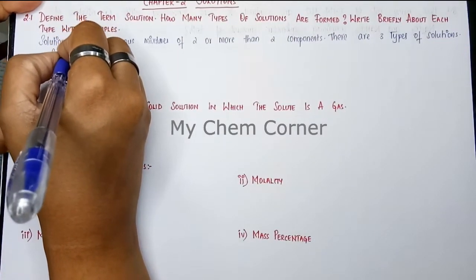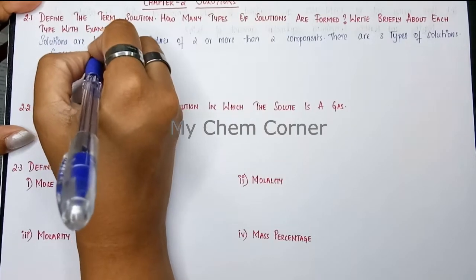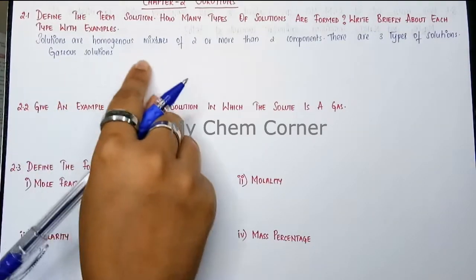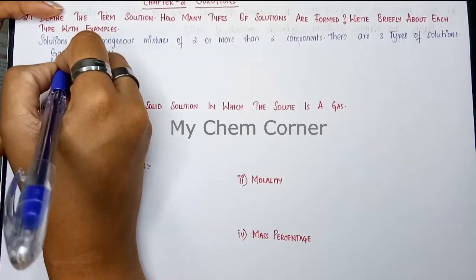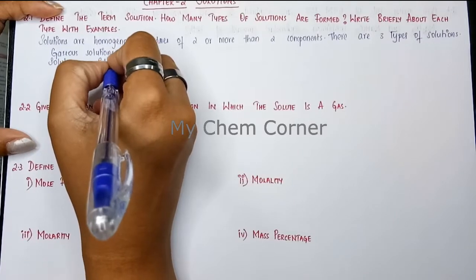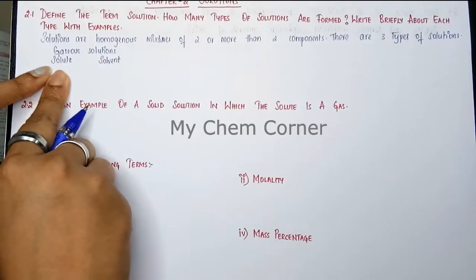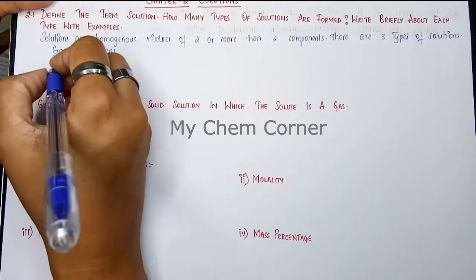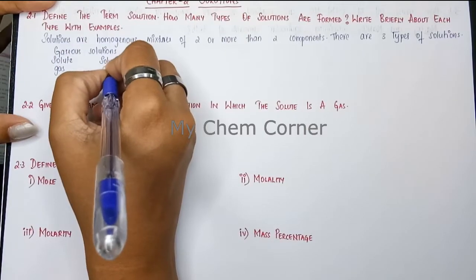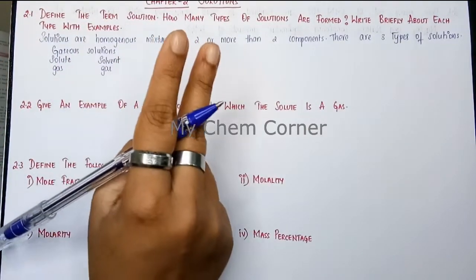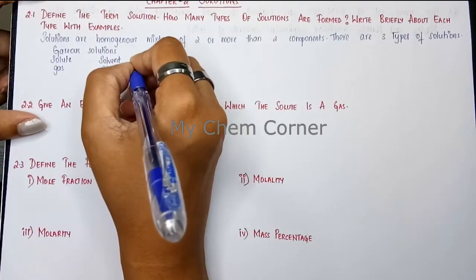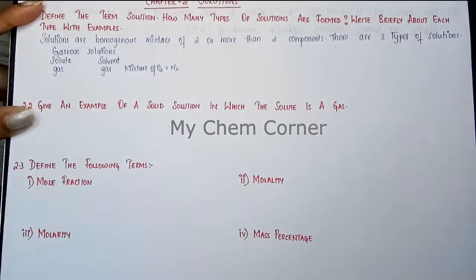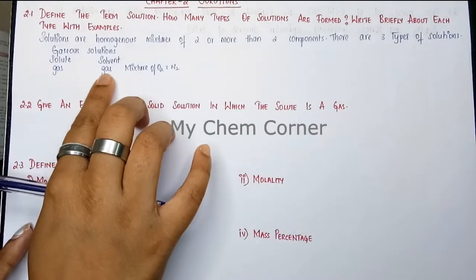The first type is gaseous solutions. In gaseous solutions, we have a solute and a solvent. When the solute is gas and the solvent is also gas, a simple example is a mixture of two gases — for instance, a mixture of oxygen and nitrogen.